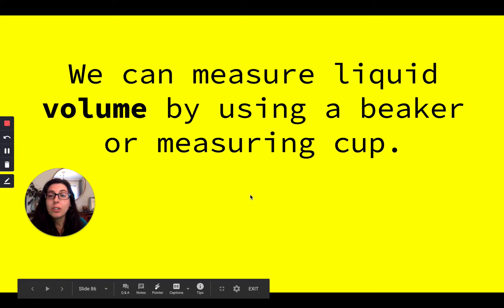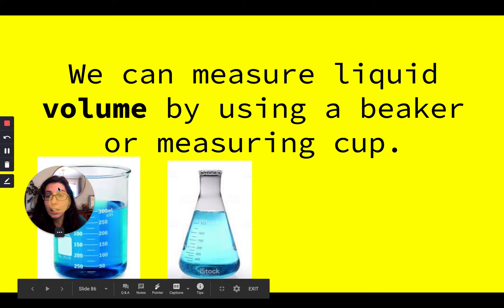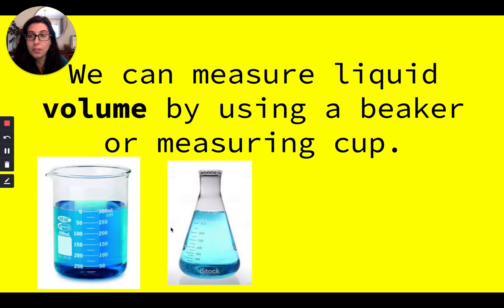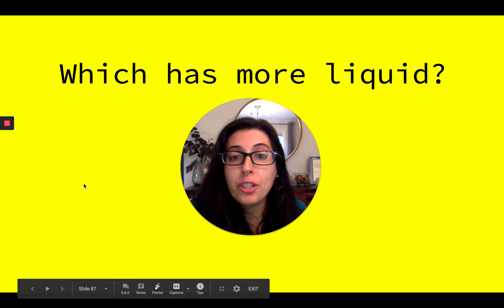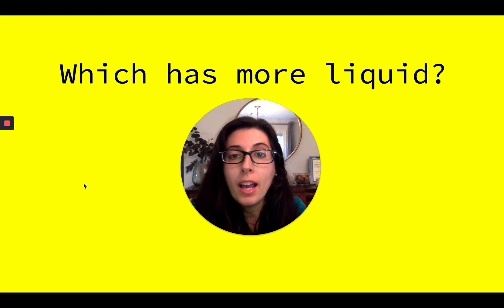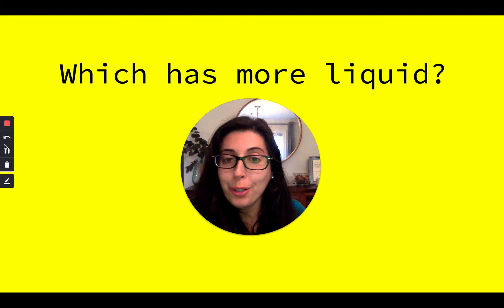We can measure liquid volume by using a beaker. These are both beakers — two different types of beakers — or a measuring cup. In just a moment, I'm going to show you two different containers that both have liquid in them, and I want you to think about which has more liquid.